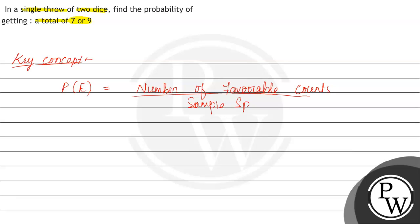When two dice are thrown, the sample space denoted as S will be: (1,1), (1,2), (1,3), (1,4), (1,5), (1,6).